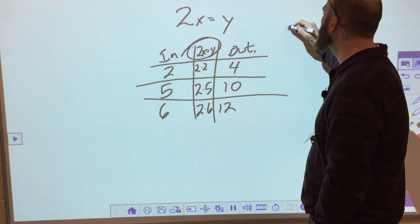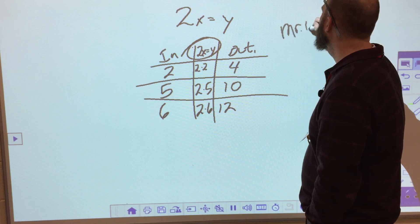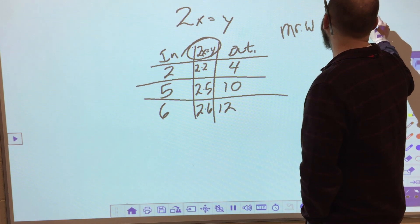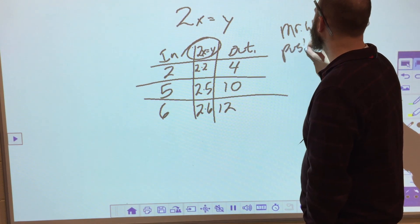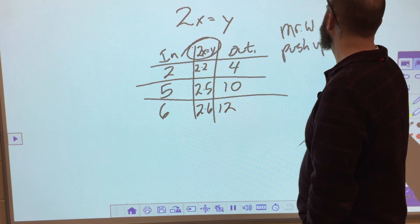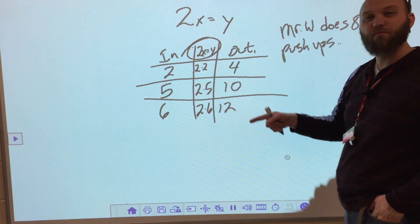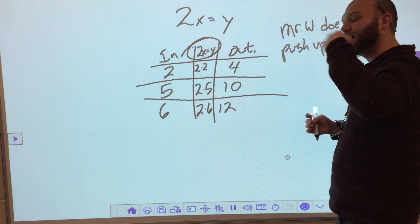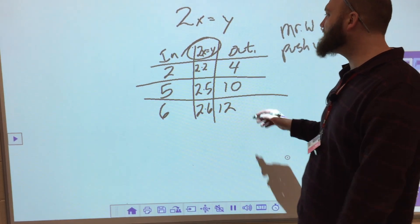So if Mr. W does 85 push-ups, I can now solve this information. So I know what Mr. Fosnot is going to have to do, depending upon how many I do. So let's say if I do 85.